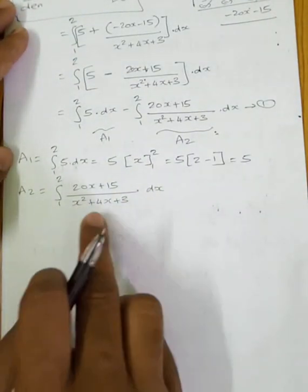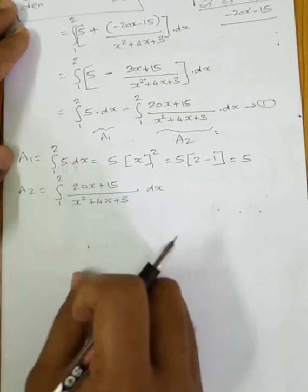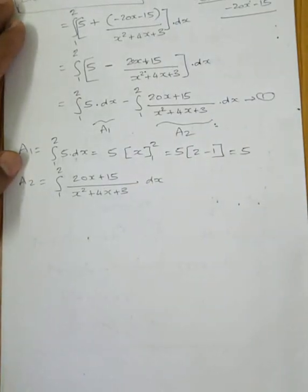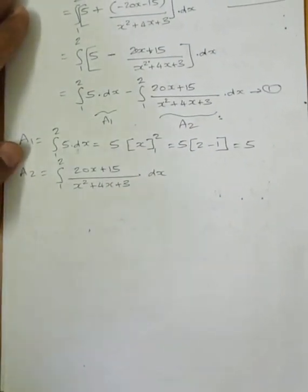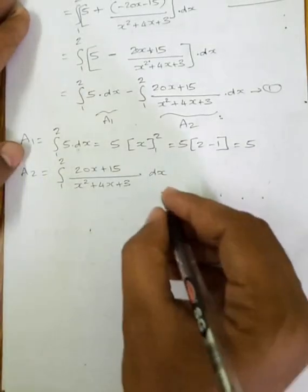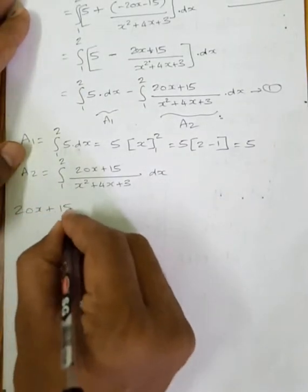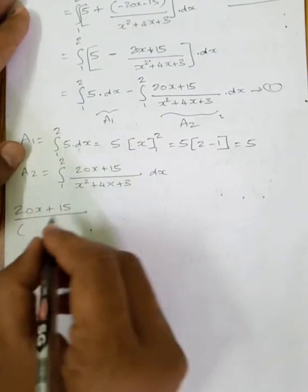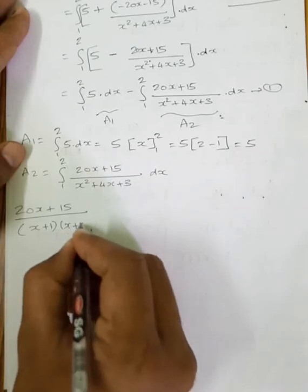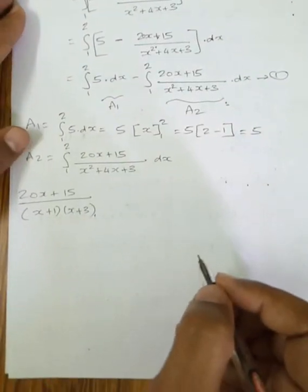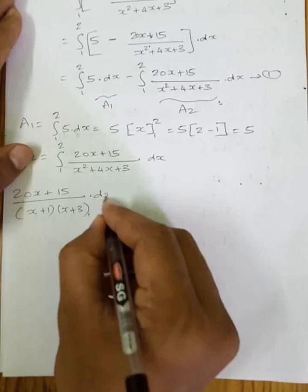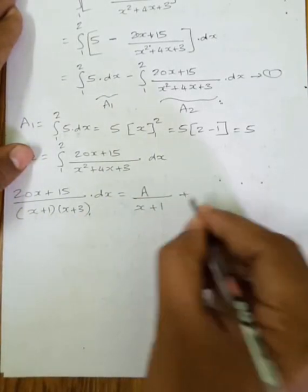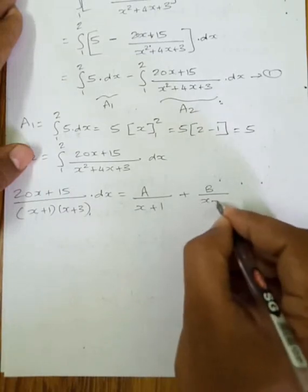For A2, we factorize the denominator x square plus 4x plus 3. Multiplying to get 3 and adding to get 4 gives factors (x+1)(x+3). So we write the partial fraction: (20x+15)/[(x+1)(x+3)] = A/(x+1) + B/(x+3).